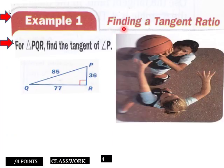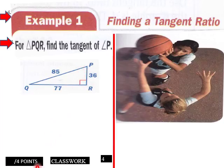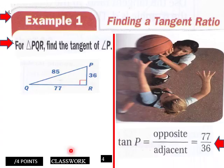Example one, finding the tangent ratio. For triangle PQR, find tangent of angle P, which is right here. This is your angle P. What would be the tangent of that angle? So opposite over adjacent would be 77 over 36 would be your tan of angle P.